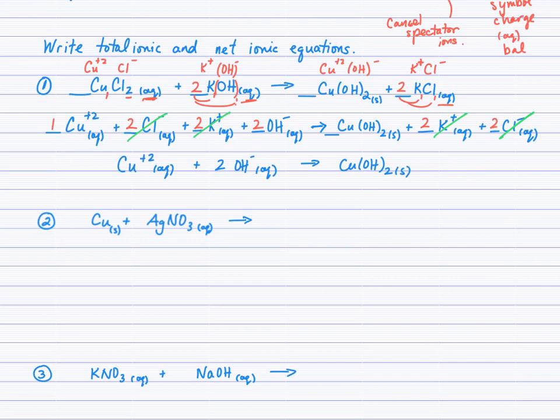Those were two double displacement questions. This next question is a different reaction pattern — a single displacement — but the same rules still apply. Predict your products following what you learned for that lesson, balance the equation, put your states in, and proceed to write the total ionic equation, dissociating only the aqueous compounds. Solids, liquids, and gases are left identical. Cancel spectator ions and write the net ionic equation. Give this a shot and check back.